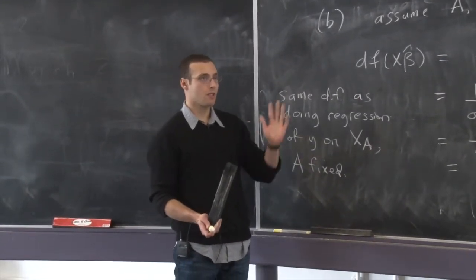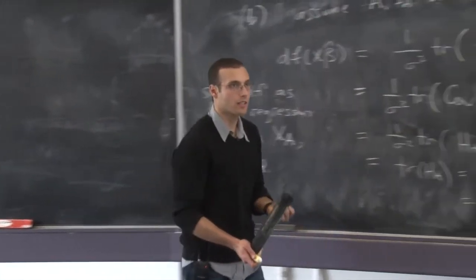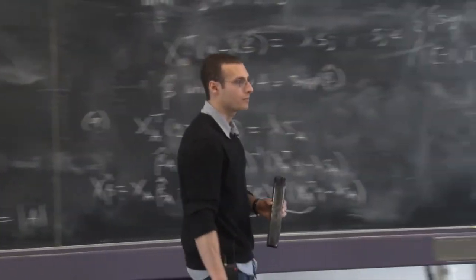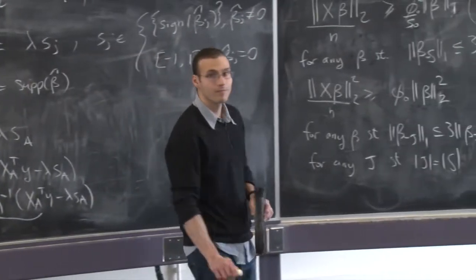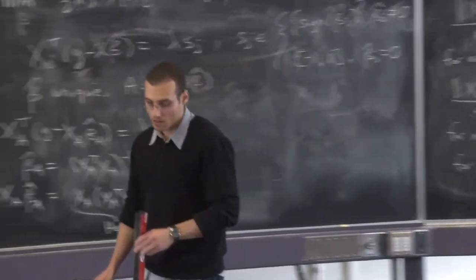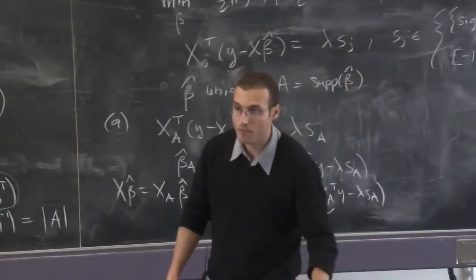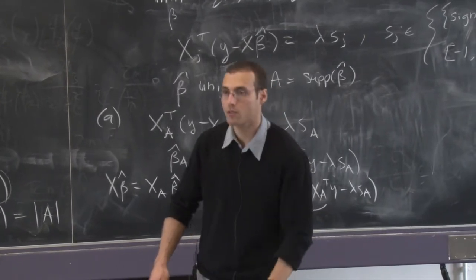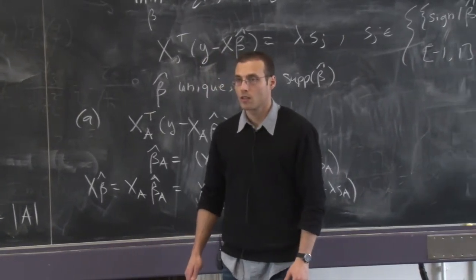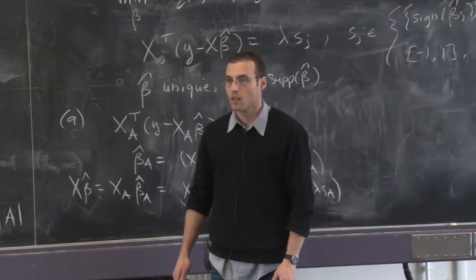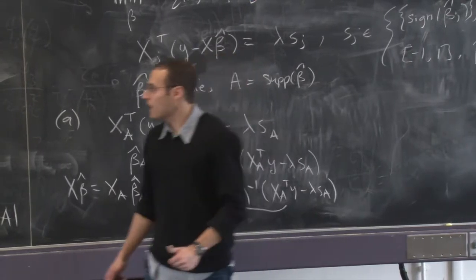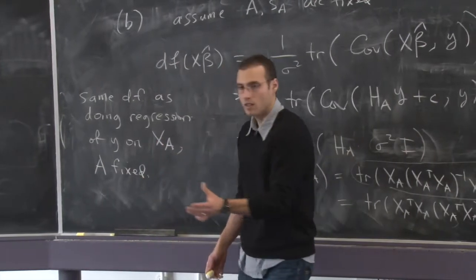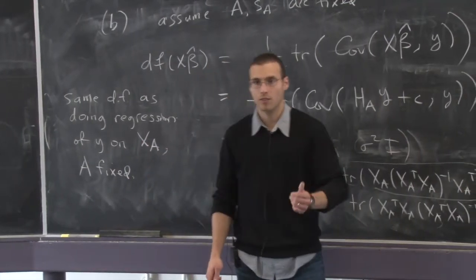Treating A as fixed, X beta-hat equals H_A times Y plus a constant C, where H_A is the hat matrix restricted to A. The covariance of H_A Y with Y is H_A times sigma squared times the identity. So the degrees of freedom is the trace of H_A — which is the trace of X_A (X_A transpose X_A) inverse X_A transpose — and by the cyclic property of trace, this equals the trace of the identity matrix of dimension equal to the size of A, which is just the size of A. The last part asks what other regression method has the same degrees of freedom: it's linear regression of Y on any fixed subset of variables of the same size as A.